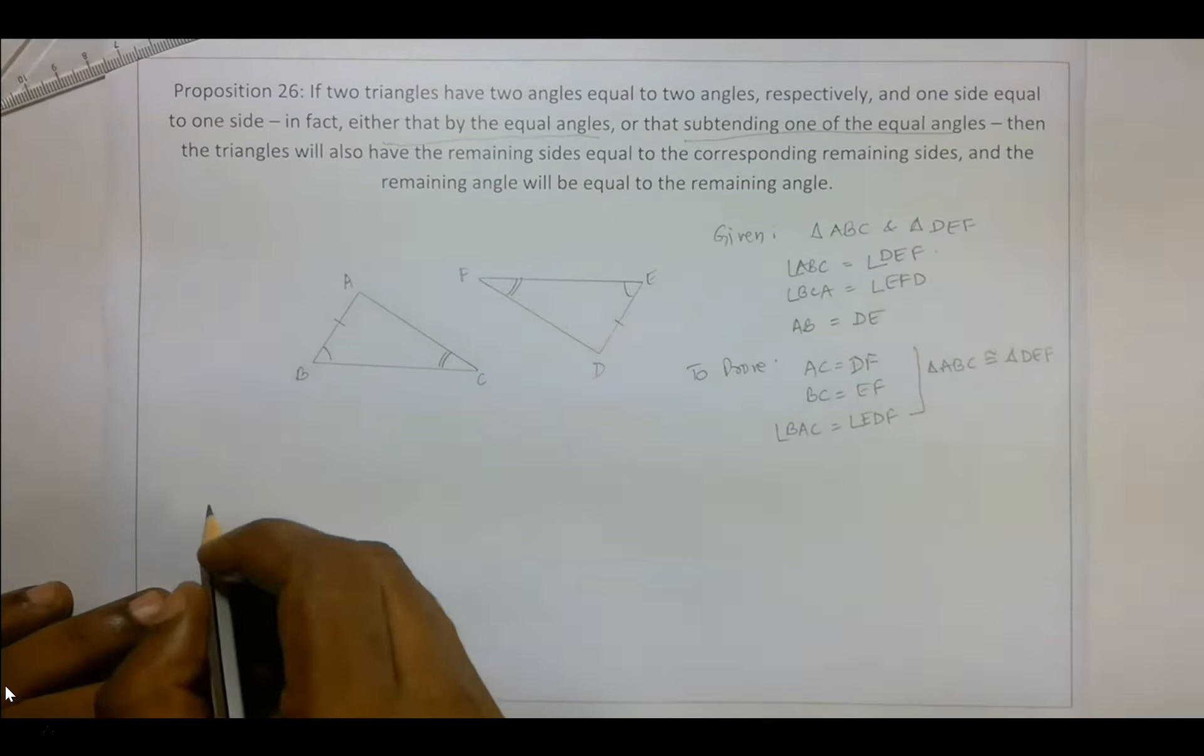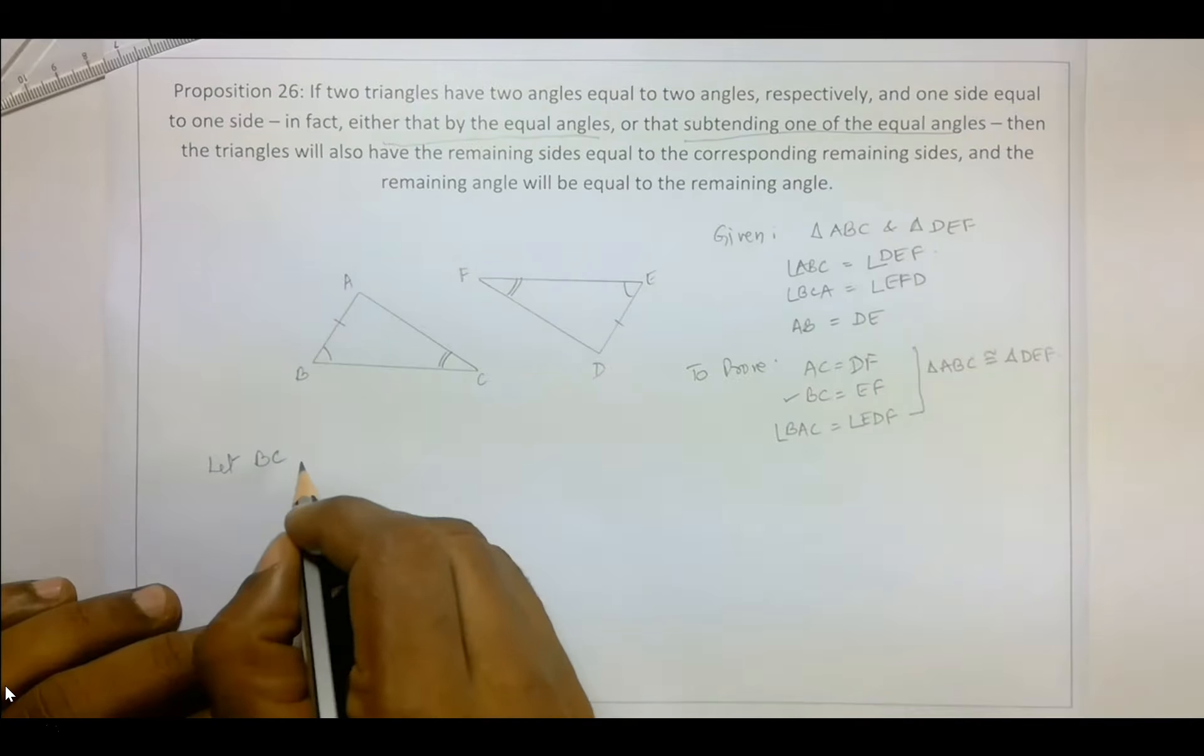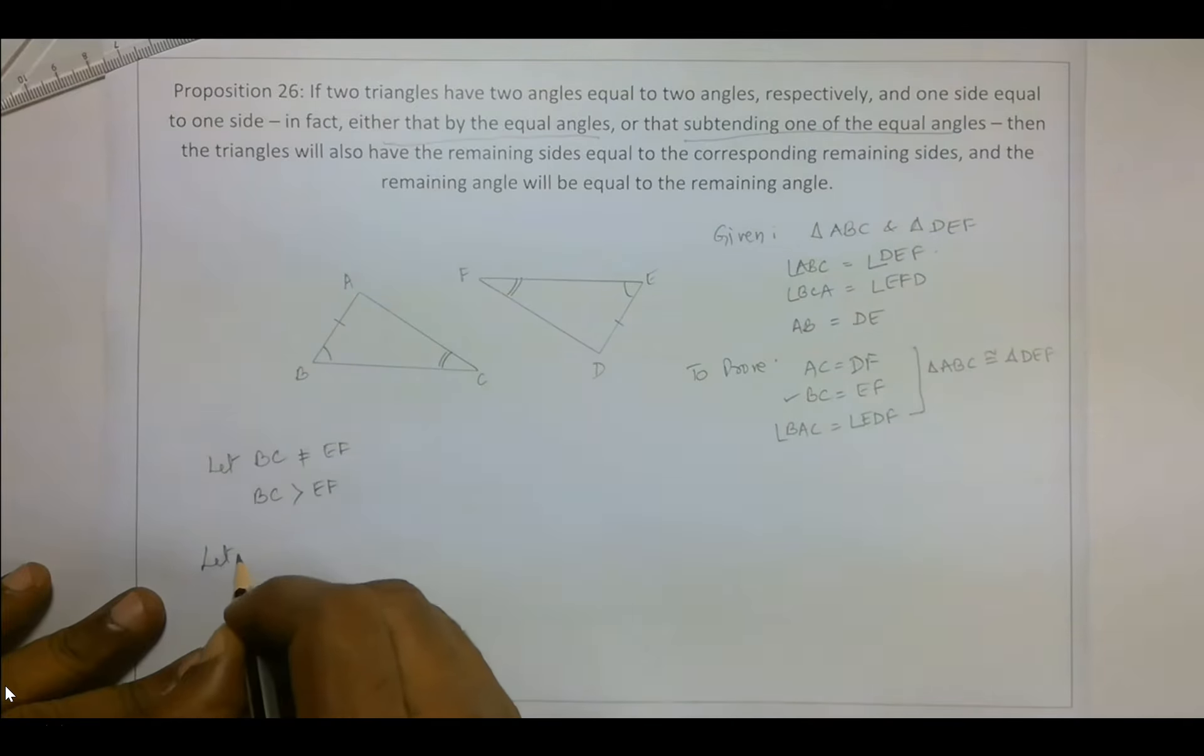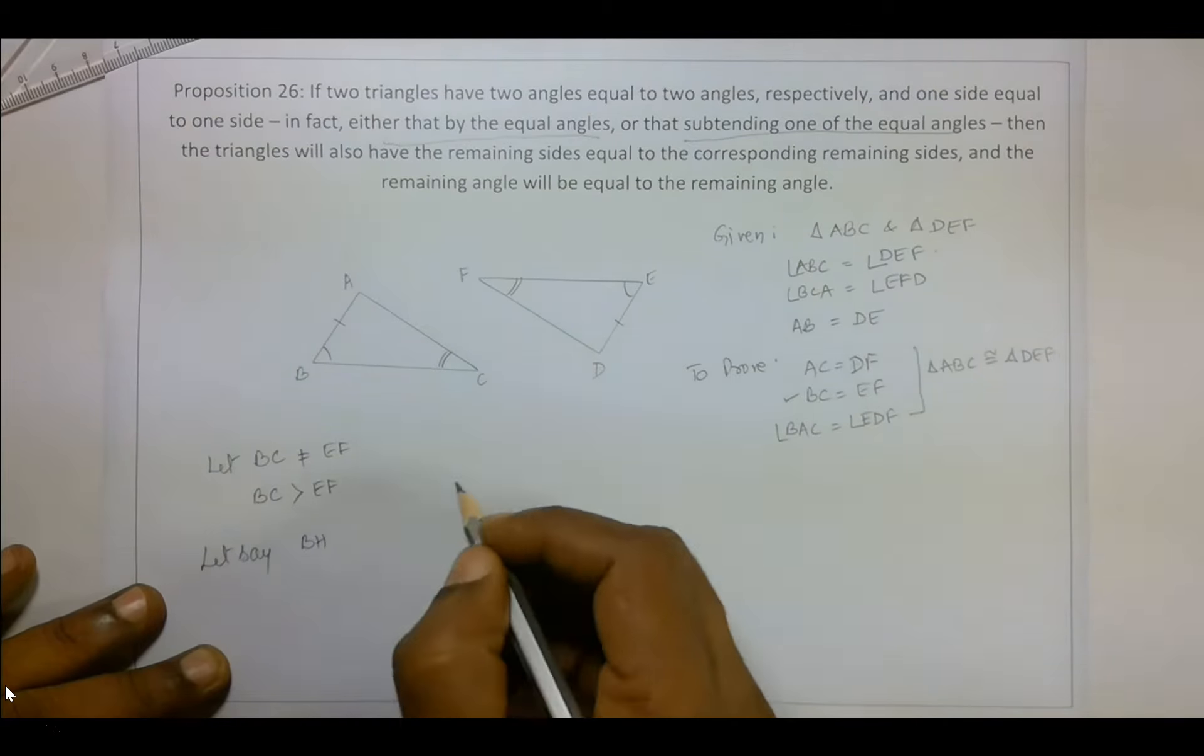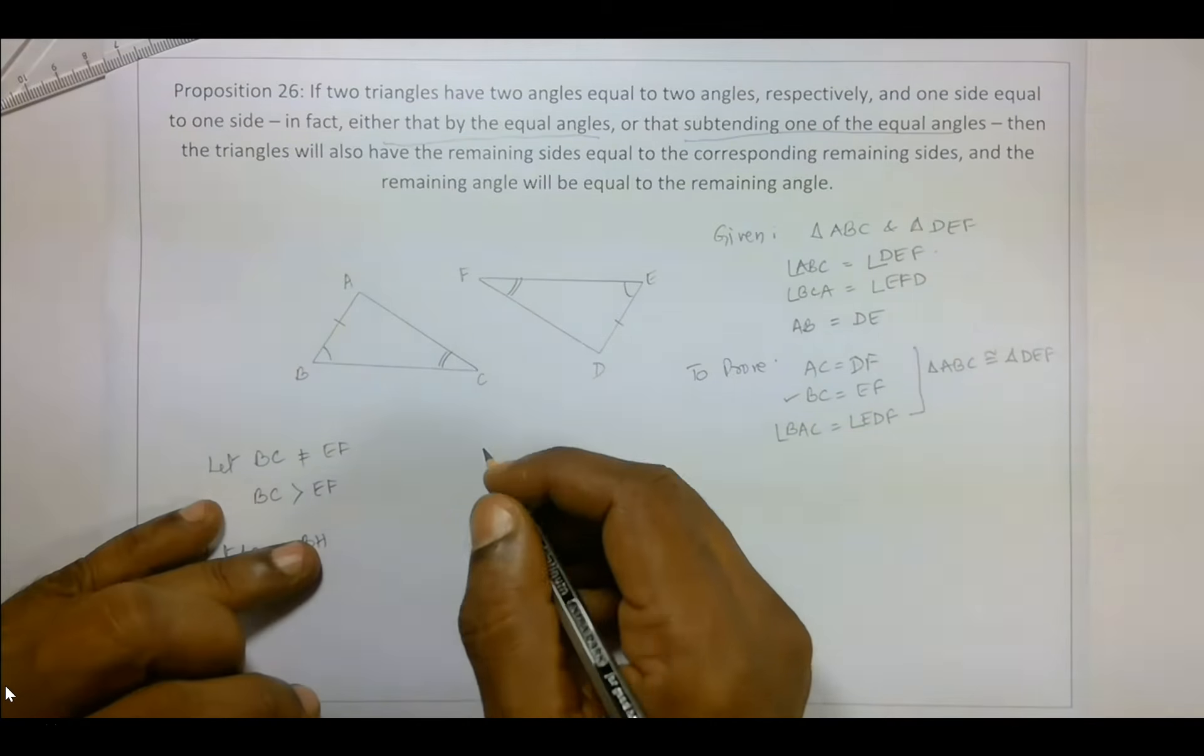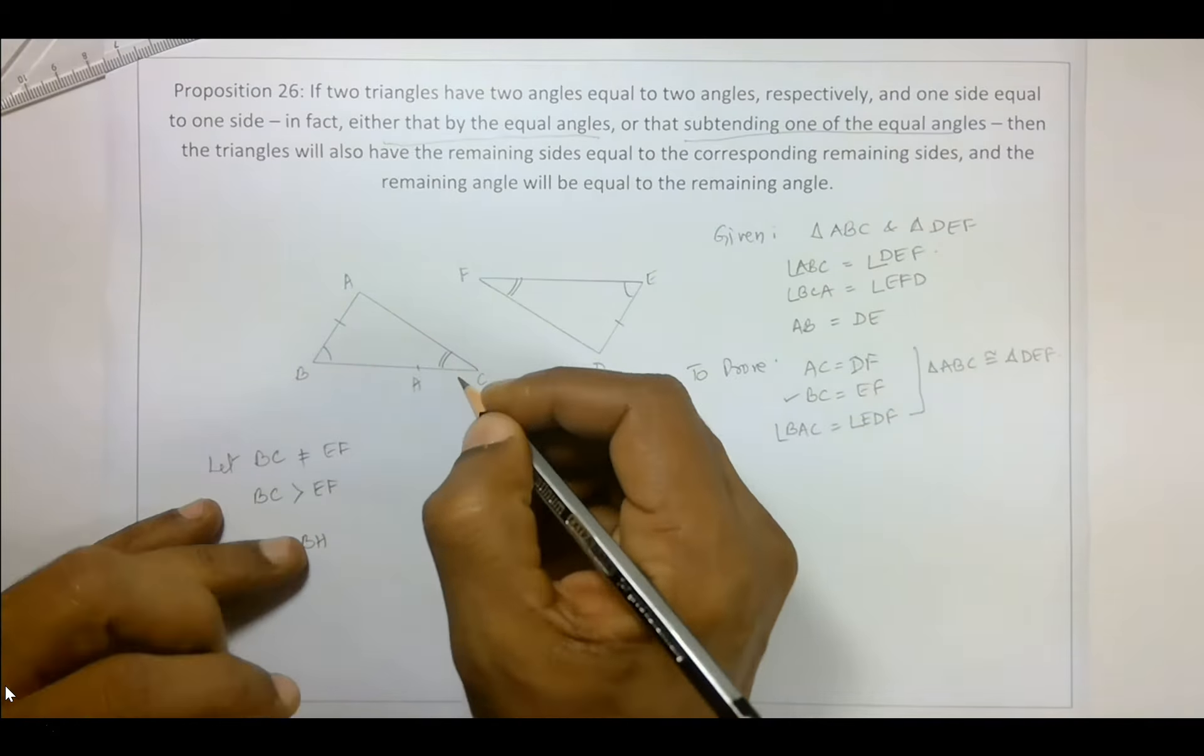Okay, let's see. Let BC not equal to EF, right? Which means one of them has to be greater. So let BC be greater than EF. Now let's say BH, where H is a point on BC such that we achieve equality. So we have a point on BC we name it as H.